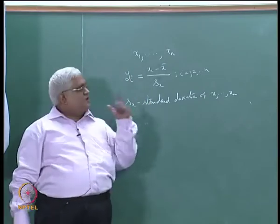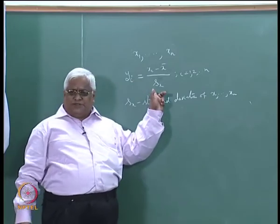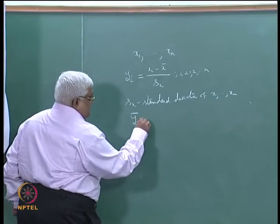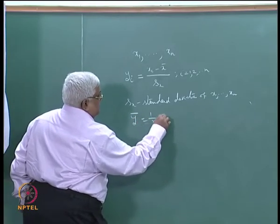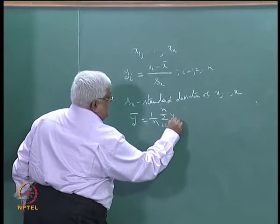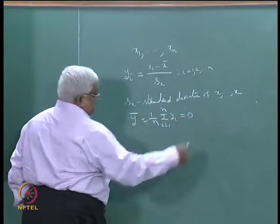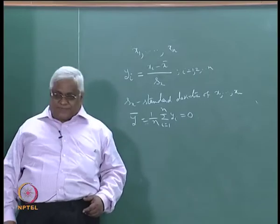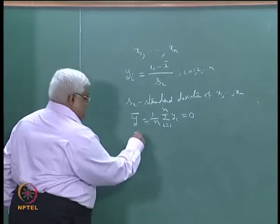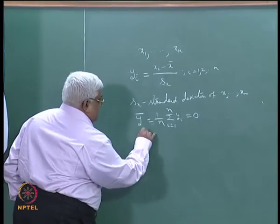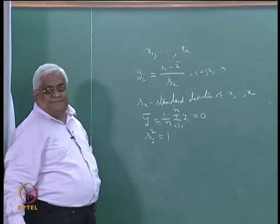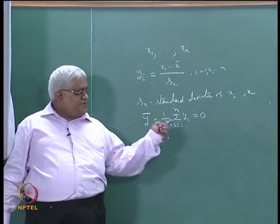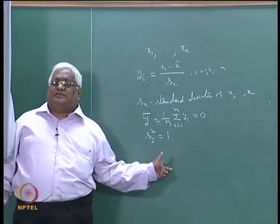What is the specialty of this? Once you do this, the mean of yi — that is y-bar, one over n summation yi — is equal to 0. You are making the mean to be 0 and you are making the variance of the y's to be equal to 1.